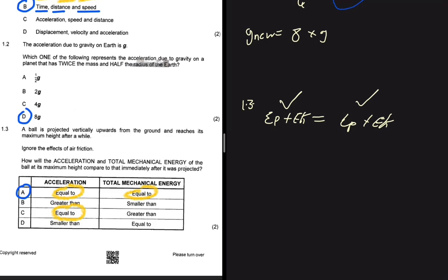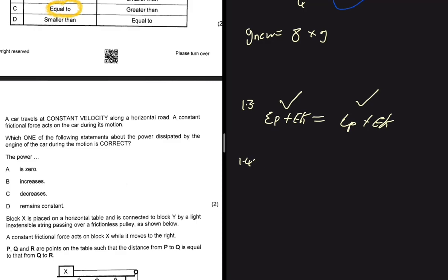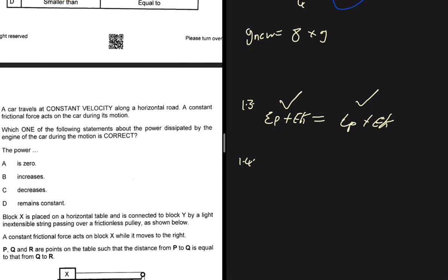Question 1.4 says a car travels at constant velocity along a horizontal road and a constant frictional force acts on it. Which statement about the power dissipated by the engine is correct? Drawing a free body diagram: if the car moves at constant velocity, the forces are balanced. The frictional force opposing motion equals the engine force driving the car forward – that is why we have constant velocity.